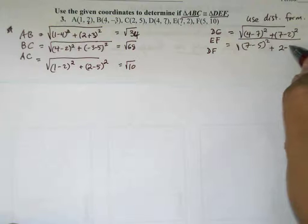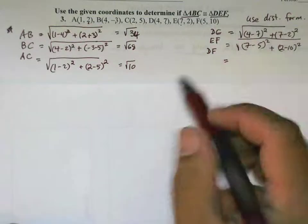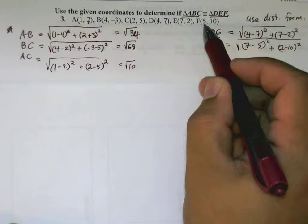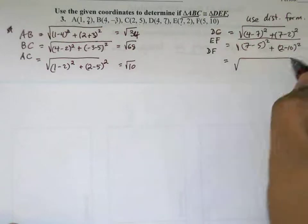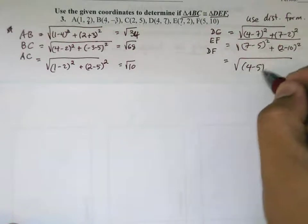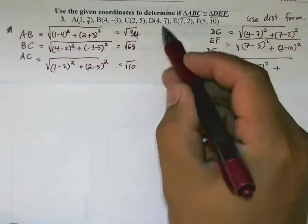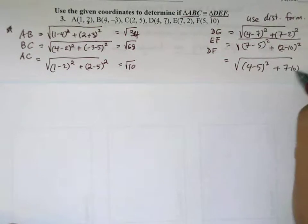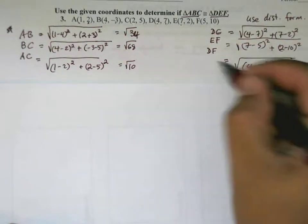Same thing with DF: √[(4-5)² + (7-10)²]. Now I'm going to use my calculator and evaluate these numbers.